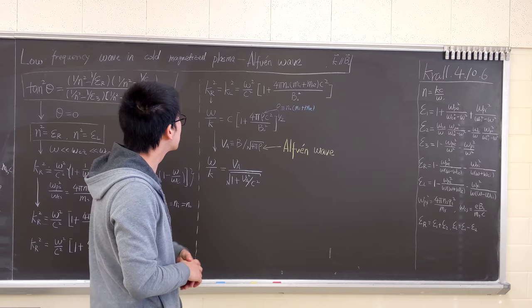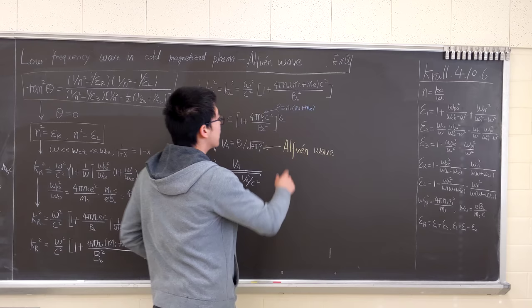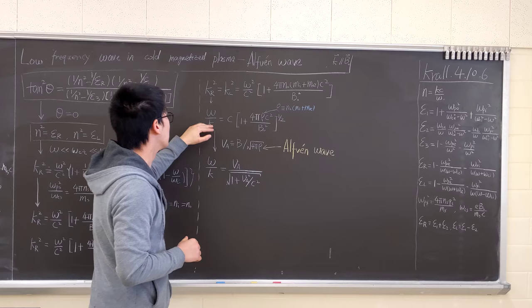If we write it in this form, we can think this. And now, M_i plus M_e is basically the mass density. So the expression can be further simplified to this form.